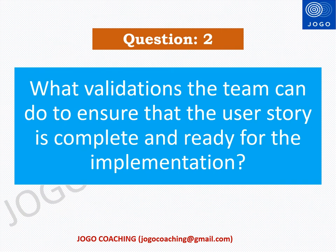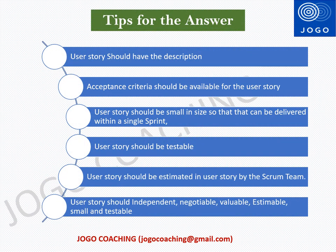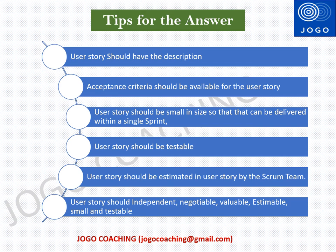Let me give a few tips to answer the second question: what validations can the team do to ensure that the user story is complete and ready for implementation? A user story can be considered complete and ready for implementation if it meets a few conditions: it should have a description, acceptance criteria should be available, it should be small enough to be delivered within a single sprint, it should be independent, testable, and estimated in story points by the team. In short, a user story should be independent, negotiable, valuable, small, and testable — these are the minimum expectations to qualify a user story as ready for planning and implementation.